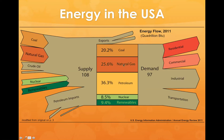Up here on the left, we're seeing coal, natural gas, and crude oil produced from the United States, as well as nuclear power and renewables. At the bottom, you're seeing petroleum imports — petroleum we use in society that's coming from outside the United States.